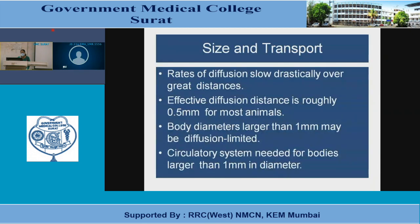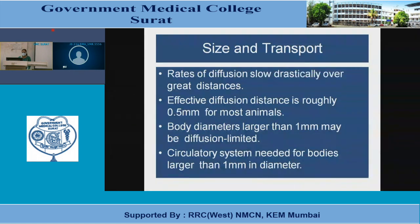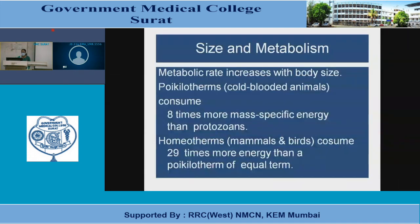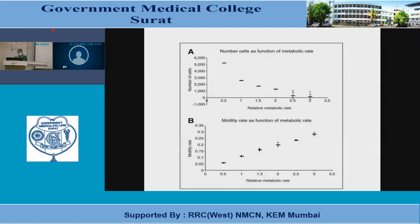Rates of diffusion slow drastically over great distances. Effective diffusion distance is roughly 0.5 mm for most animals, and body diameters larger than 1 mm may be diffusion limited. A circulatory system is needed for bodies larger than 1 mm in diameter. Metabolic rate increases with body size. Poikilotherms (cold-blooded animals) consume 8 times more mass-specific energy than protozoans.